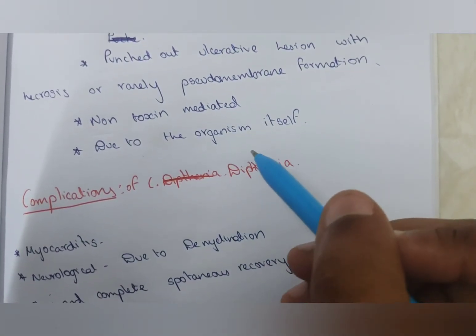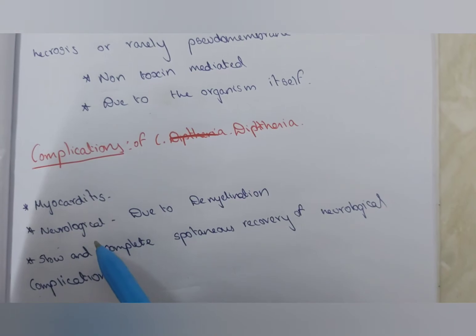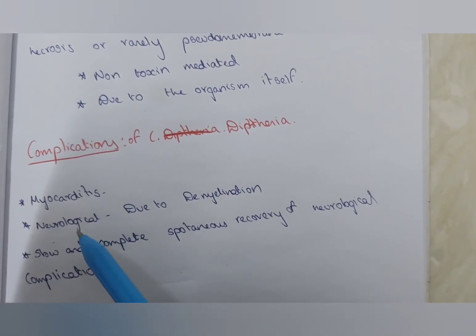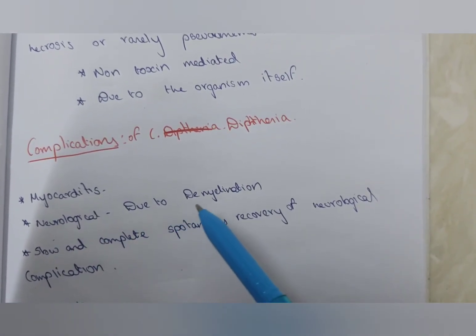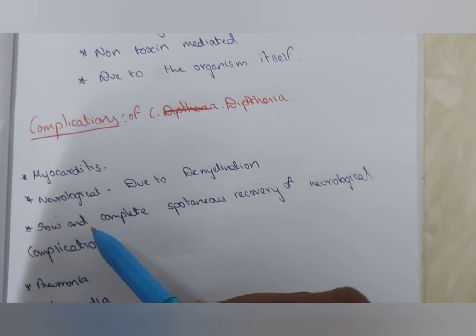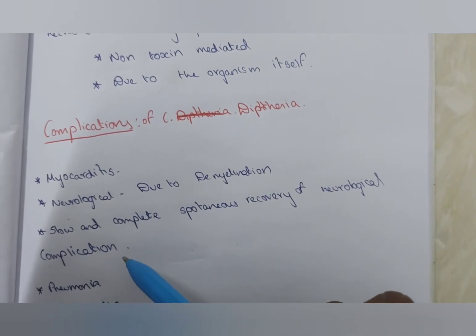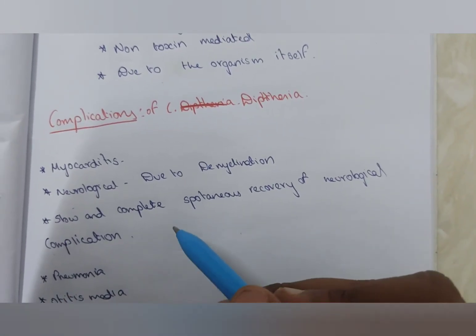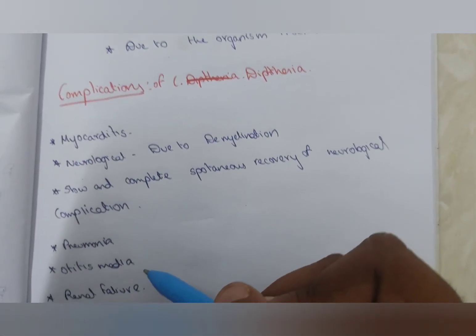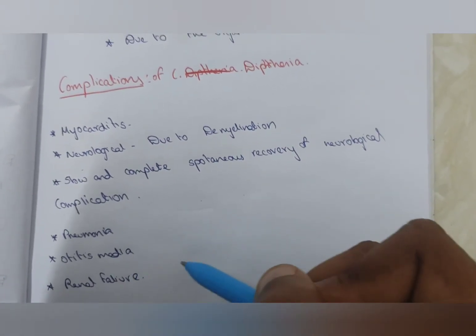Complications of diphtheria: Myocarditis, the most important one. Neurological problems due to demyelination. Slow and complete spontaneous recovery of neurological complications. Pneumonia, otitis media, and renal failure.